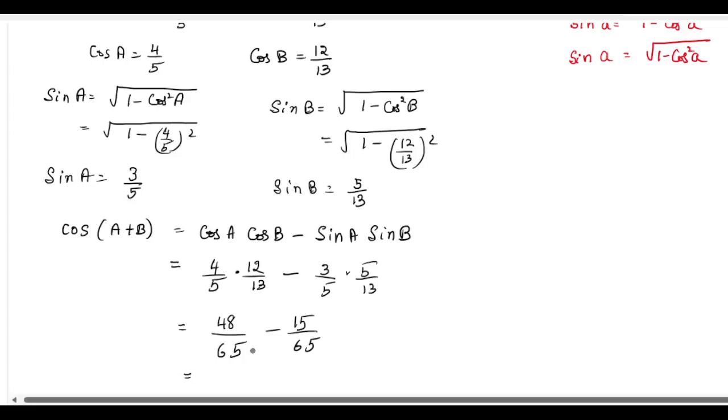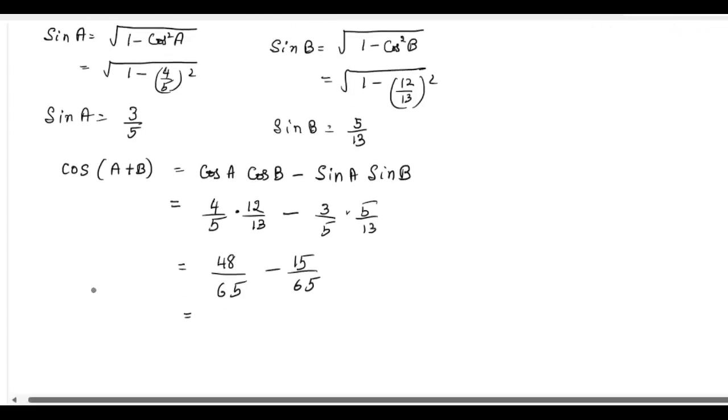which is equal to cos A plus B equal to 33 by 65. Now, A plus B equal to, we can bring this cos to RHS.